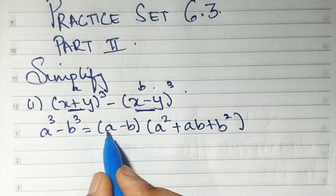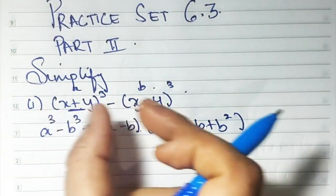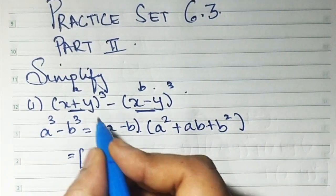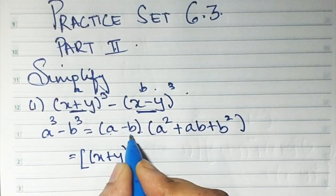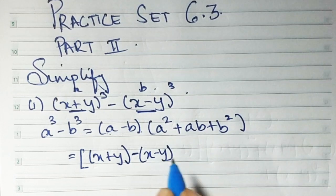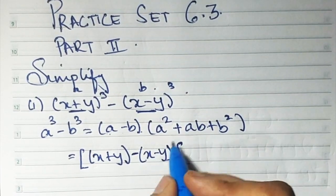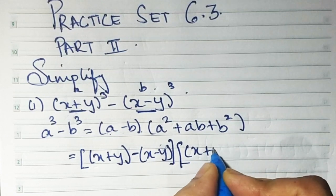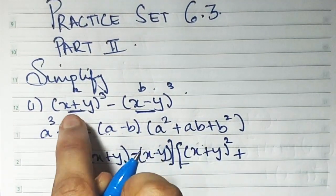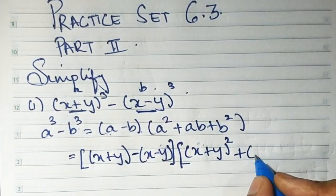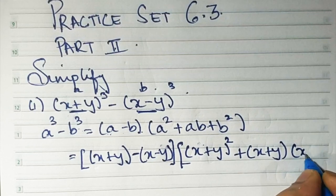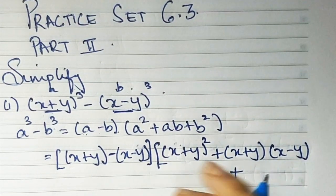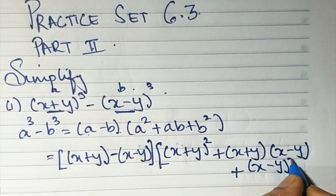Let's substitute. Instead of a minus b, I put (x + y) minus (x - y). Now the second bracket: a square means (x + y) the whole square, plus a into b means (x + y) into (x - y), plus b square means (x - y) the whole square.